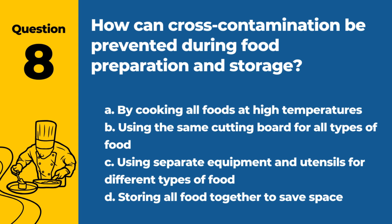Question 8. How can cross-contamination be prevented during food preparation and storage? A. By cooking all foods at high temperatures. B. Using the same cutting board for all types of food. C. Using separate equipment and utensils for different types of food. D. Storing all food together to save space. Answer: C. Preventing cross-contamination involves using separate equipment and utensils for different types of food, especially raw and cooked foods.